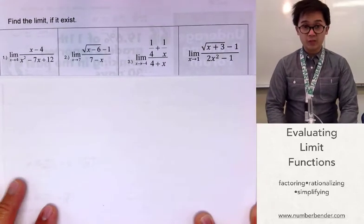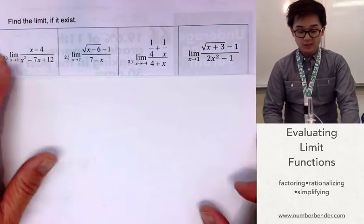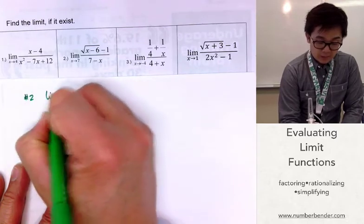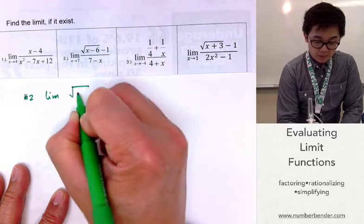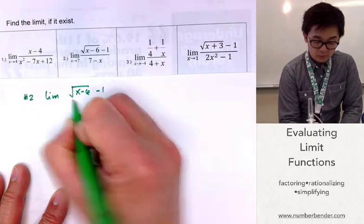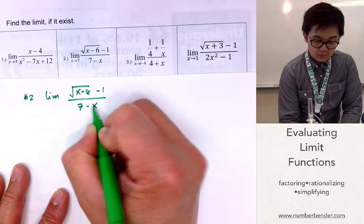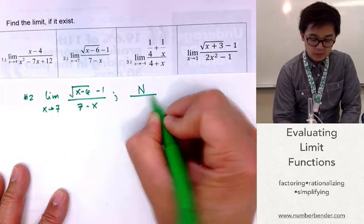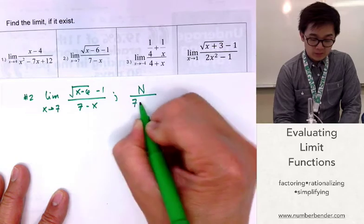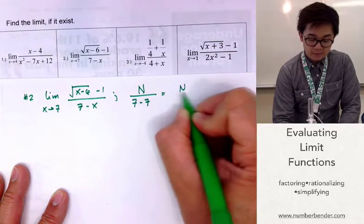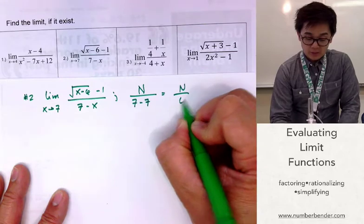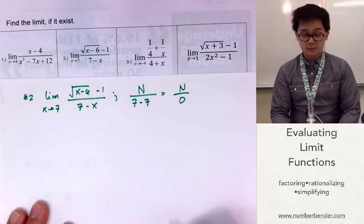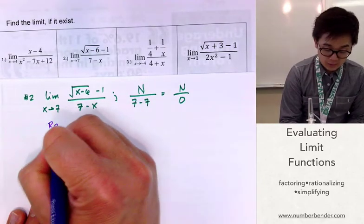Now let's have problem number 2, which has a different function involving square roots. We have the limit of square root of x minus 6 minus 1 all over 7 minus x as x approaches 7. By substitution, if we plug in the value of 7, the function will be undefined. So we'll be using another technique — rationalizing.